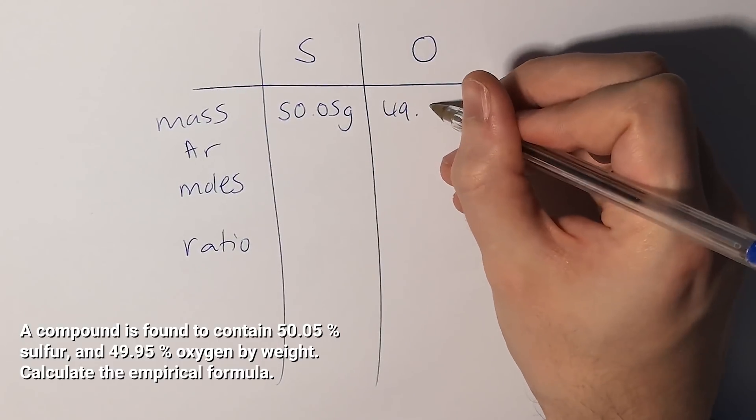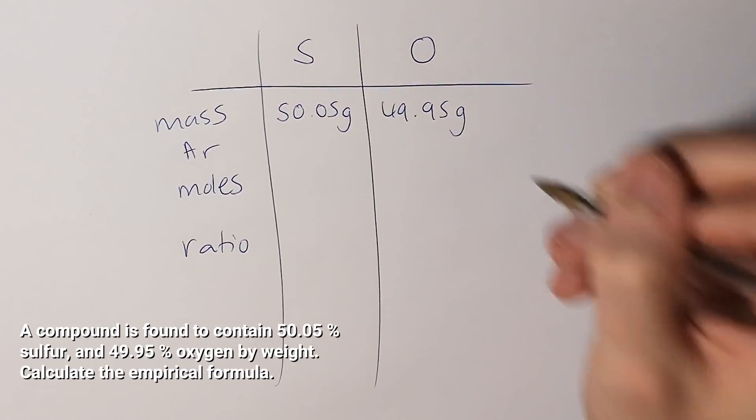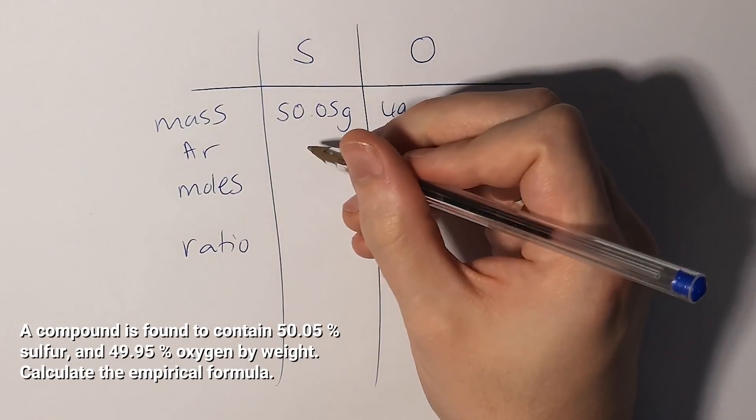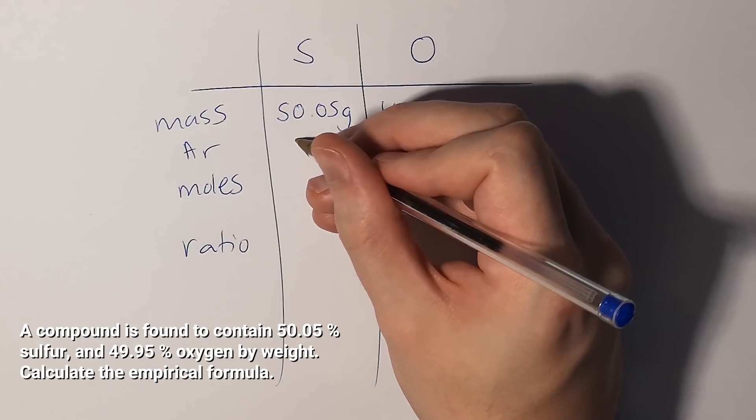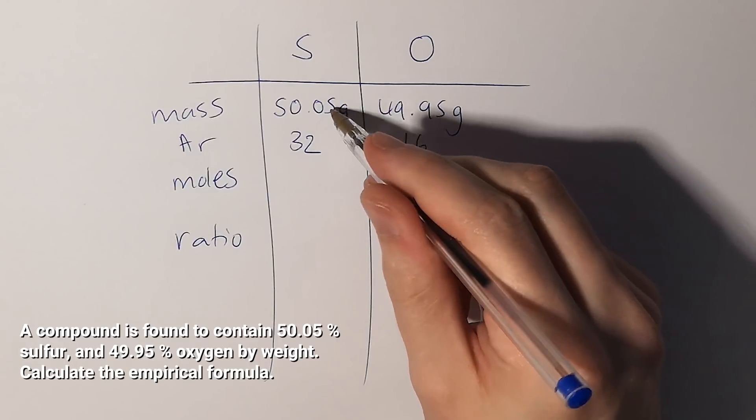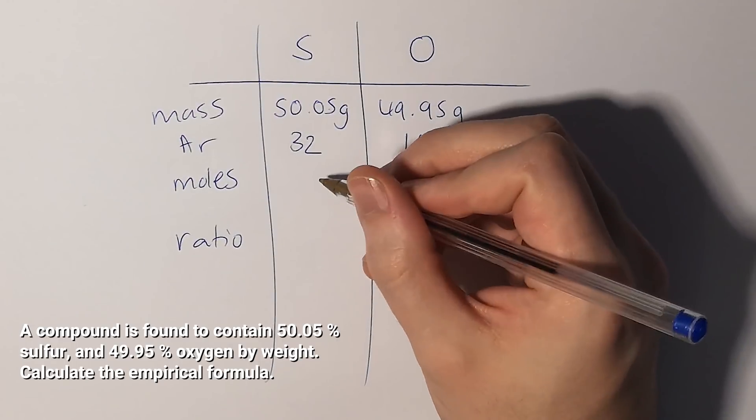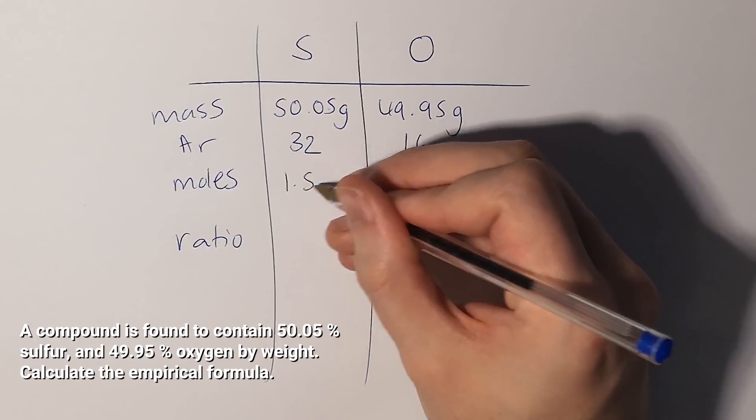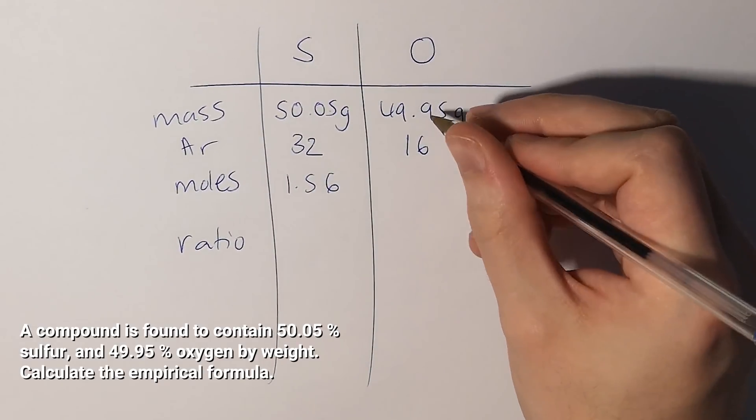The atomic mass for sulfur is 32 and for oxygen it's 16. That means the total number of moles is 1.56 for sulfur and 3.12 for oxygen.